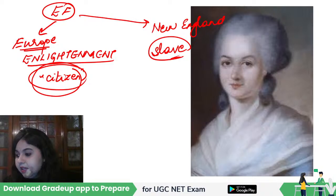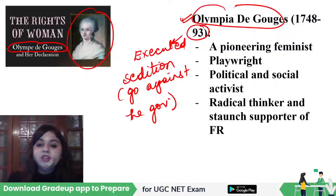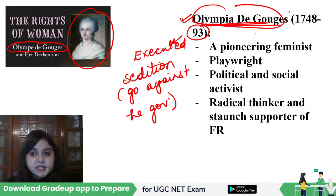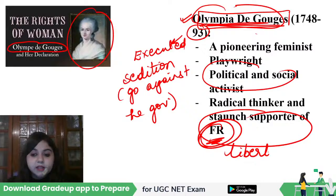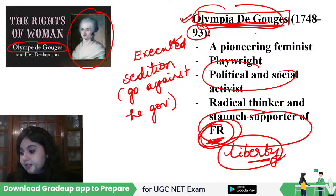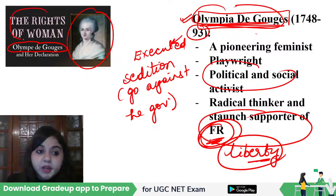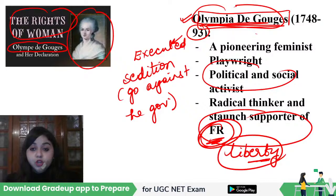Fanny Burney is also another important example. These names are coming in your exams. Olympe de Gouges is writing the Declaration of the Rights of Women way before Mary Wollstonecraft wrote A Vindication of the Rights of Women. Always remember that these early feminist names have to be on your fingertips. She argued women are free and equal to men — that has been the plea of feminism throughout — there has to be an egalitarian society where men and women are equal.